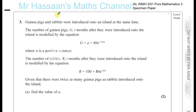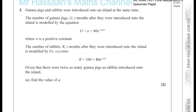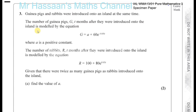It tells us that guinea pigs and rabbits were introduced onto an island at the same time. The number of guinea pigs, g, t months after they were introduced onto the island is modelled by the equation g equals a plus 60 times e to the power of minus 0.05t, where a is a positive constant, and e is the natural number.